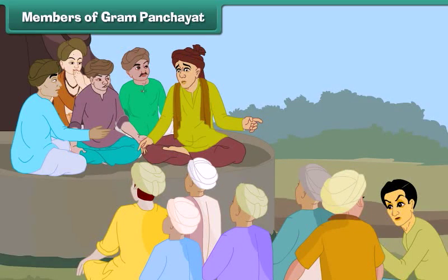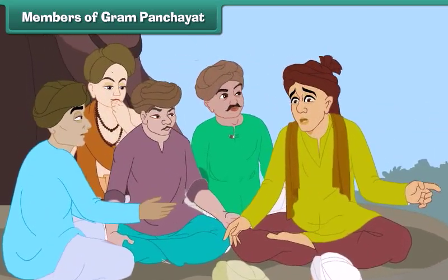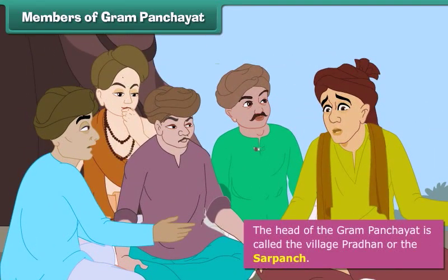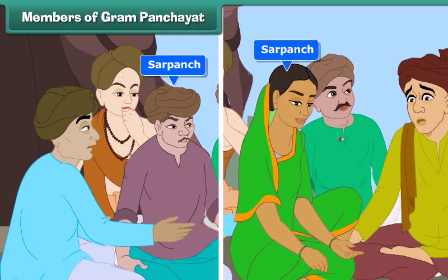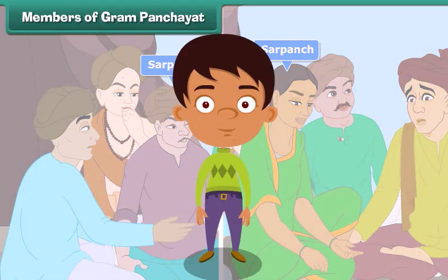A gram panchayat consists of five members. The head of the gram panchayat is called the village pradhan or the sarpanch. The sarpanch can be a male or a female. The members of a gram panchayat hold meetings to solve the problems of the villagers. The panchayat also solves land, water, and other disputes among villagers.